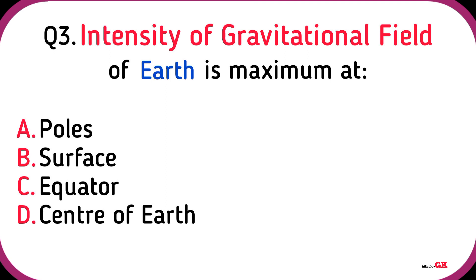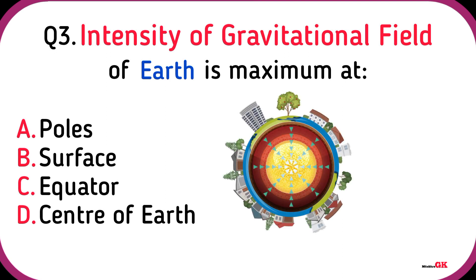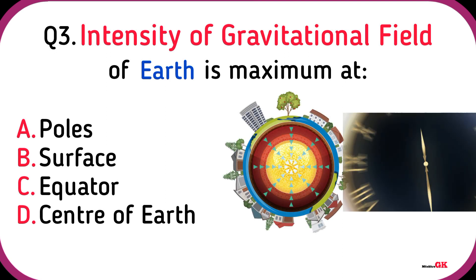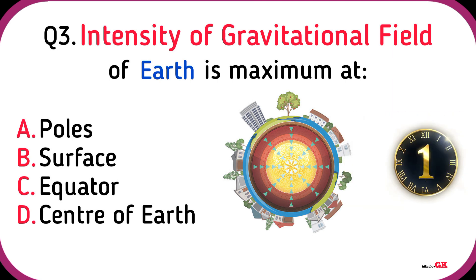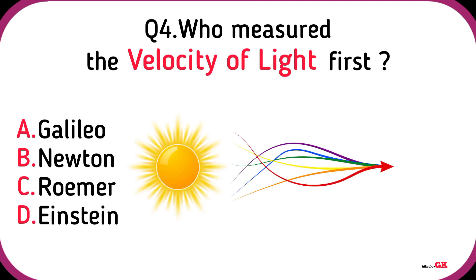Intensity of gravitational field of earth is maximum at poles. Who measured the velocity of light first? Rømer.